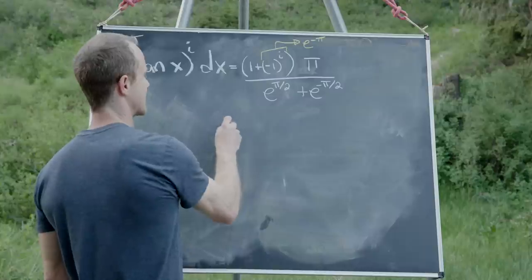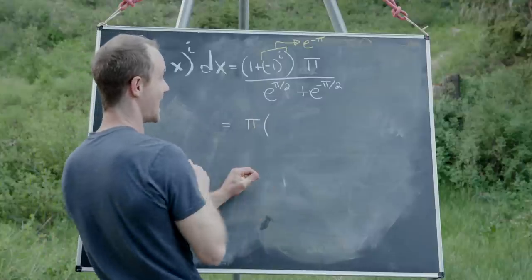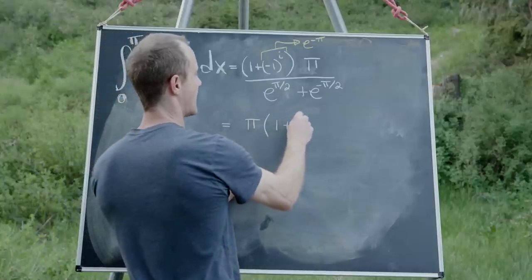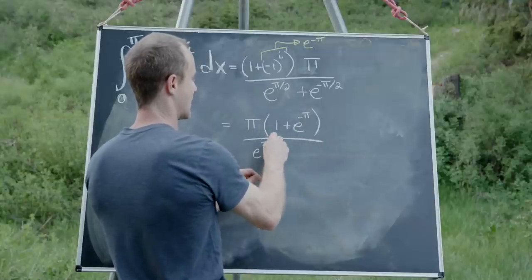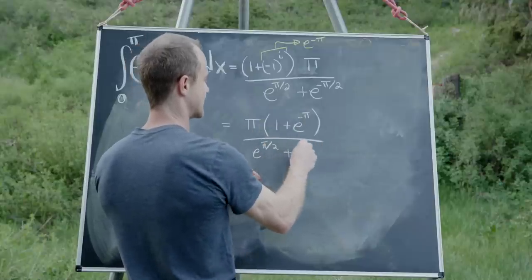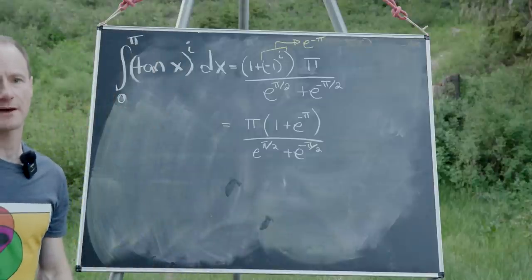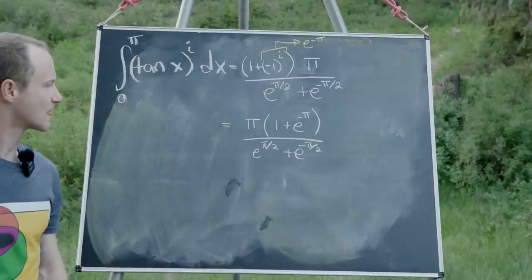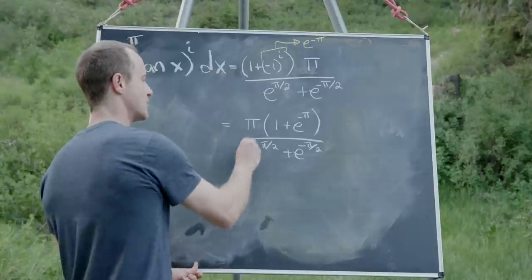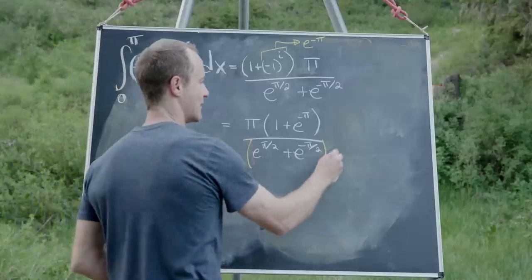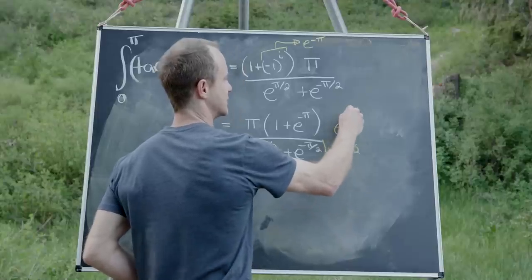That leaves us with π times (1 + e^(−π)) over (e^(π/2) + e^(−π/2)). Our best bet is to multiply the numerator and denominator by e^(−π/2).